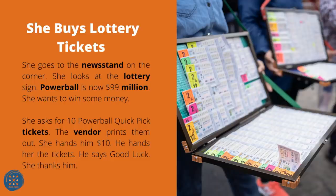She Buys Lottery Tickets. She goes to the newsstand on the corner and looks at the lottery sign. Powerball is now $99 million. She wants to win some money. She asks for 10 Powerball quick pick tickets. The vendor prints them out. She hands him $10. He hands her the tickets and says good luck. She thanks him.